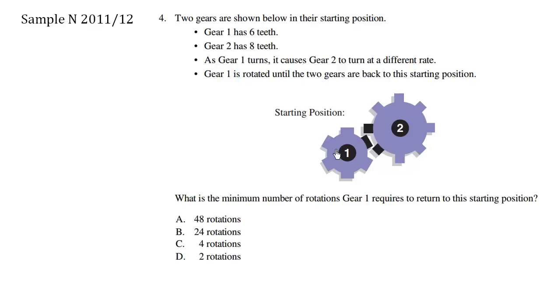As gear 1 turns, it causes gear 2 to turn at a different rate. This one here is going to spin pretty fast and this one is going to spin a bit slower because it's bigger. Gear 1 is rotated until the two gears are back to this starting position. The starting position is such that this black gear is locked between these other two positions here. This is the starting position.